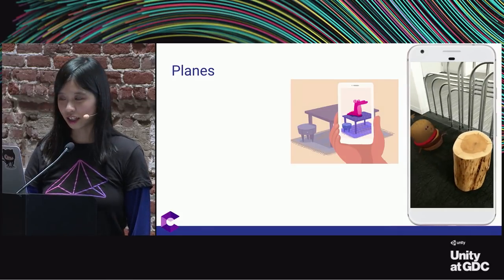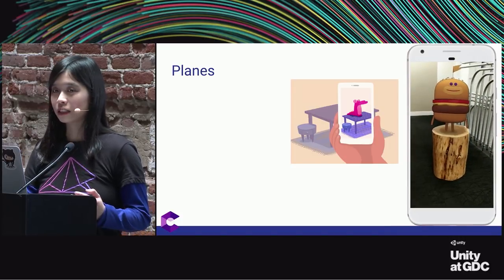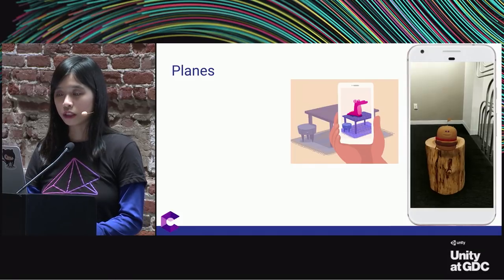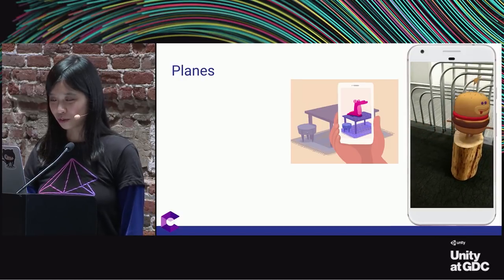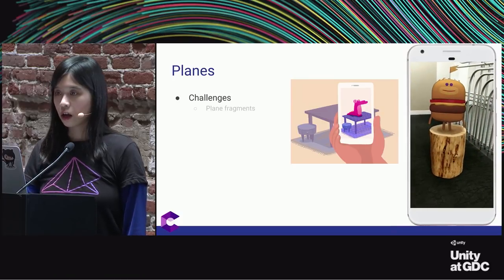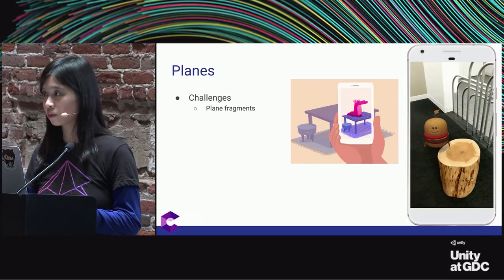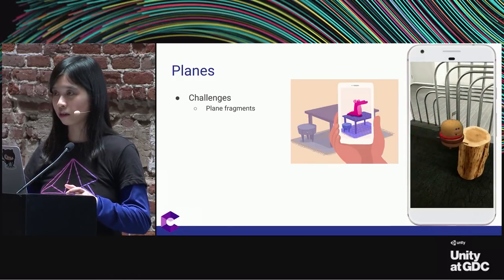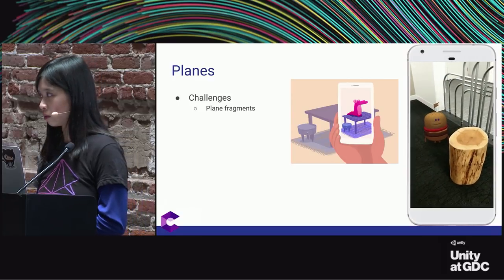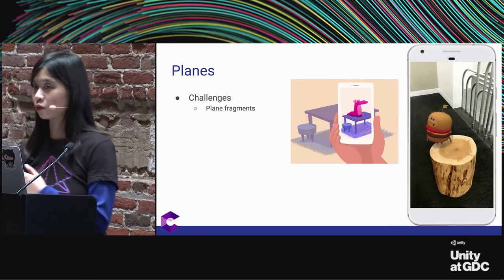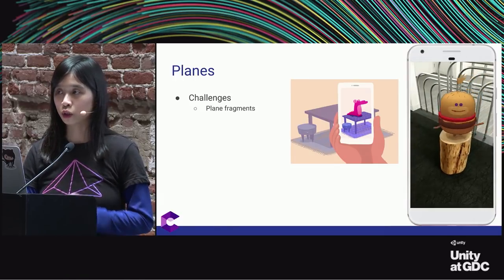This takes us to planes. ARCore provides what they call trackables — these can be points or planes. When you get all the trackables for a session, they really mean all of the trackables. Remember how some planes can be subsumed or merged with others? The little plane fragments have a flag called 'subsumed by,' which becomes non-null when they are subsumed. But they are still returned in the list of trackables ARCore gives you, so you need to filter for valid planes.